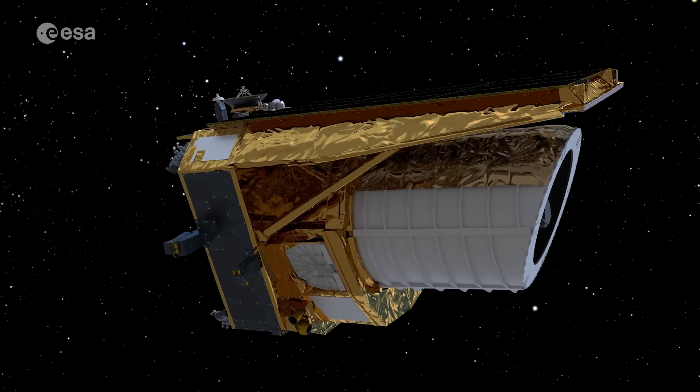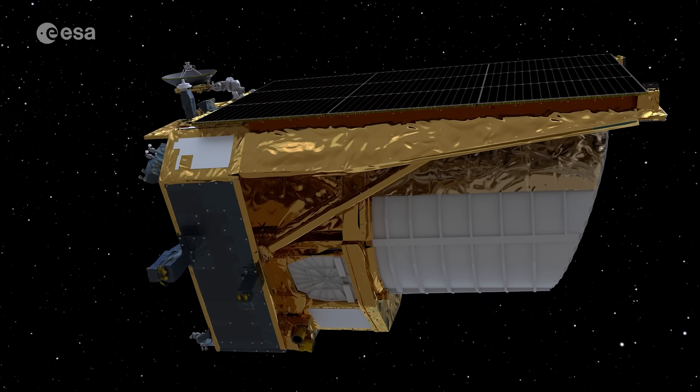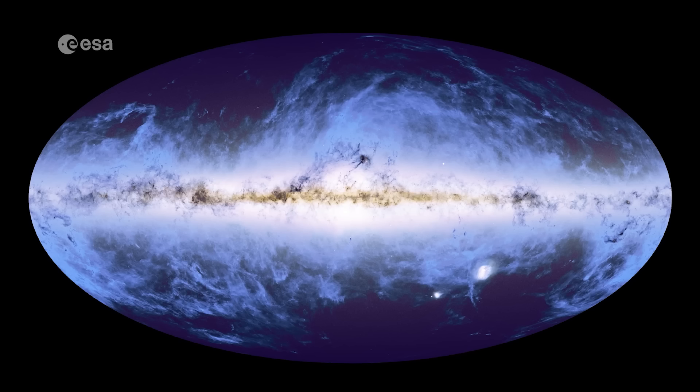Euclid's science mission officially kicked off in early 2024, focusing its gaze on three carefully selected regions of the sky. These are known as the Euclid Deep Field North, Euclid Deep Field South, and Euclid Deep Field Fornax.